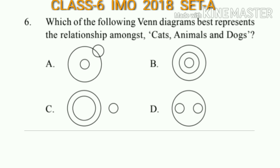Question number 6: Which of the following Venn diagrams best represents the relationship amongst cats, animals, and dogs? Cats and dogs both are animals, so the answer will be option D.